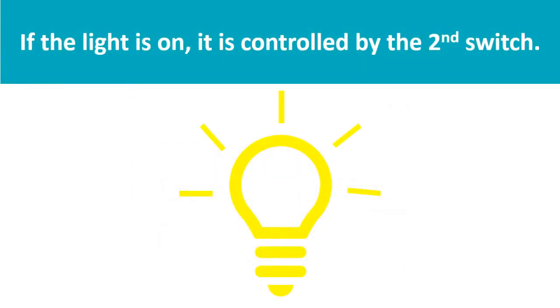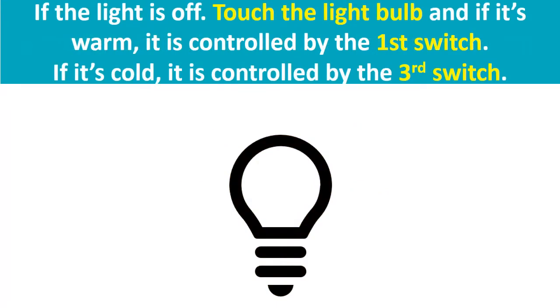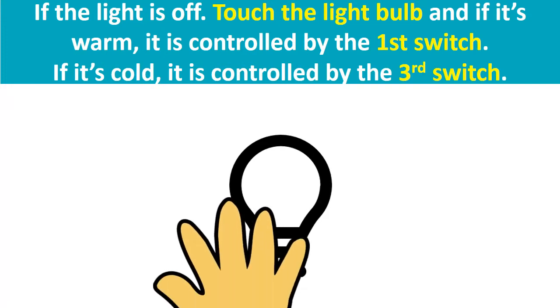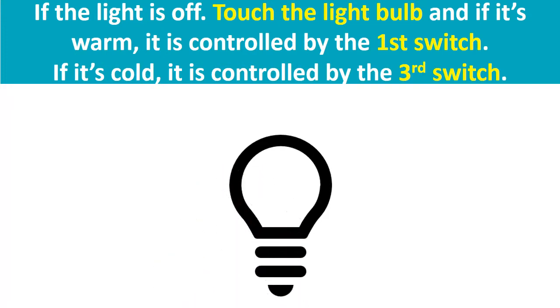If the light is on, it is controlled by the second switch. If the light is off, touch the light bulb. If it's warm, it means that it is controlled by the first switch. If it's cold, it is controlled by the third switch.